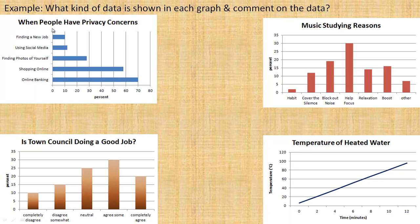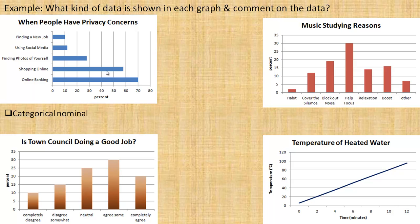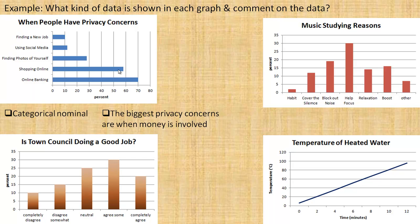The first one has to do with when people have privacy concerns being online — for example, finding a new job, using social media, finding photos of yourself, shopping online, or online banking. This would be an example of categorical nominal data. We're not ordering it; there are categories here but no particular order other than perhaps listing from largest to smallest as a convention. One comment is that the biggest privacy concerns seem to be centered around money — shopping online or online banking.